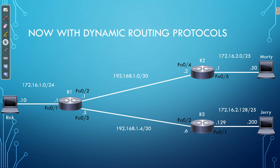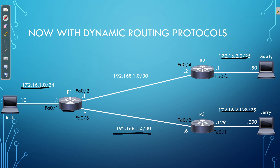Let's go back to the simple example and see how dynamic routing protocols help. Instead of the network engineer having to go into R1 and manually specify how to reach every network, we go into every single router and configure the dynamic routing protocol on those devices — and then they do everything else. R1 will speak to R2 and say: these are all the networks I know about. If there are any networks you don't know about but I know about, you can reach those networks through me.